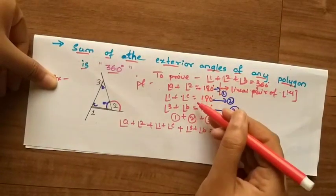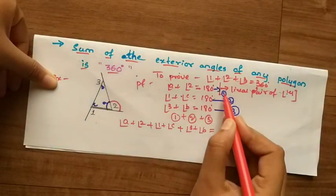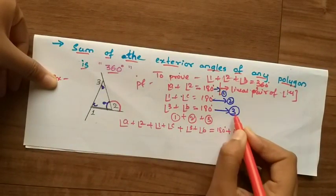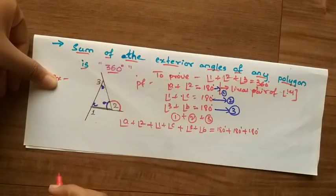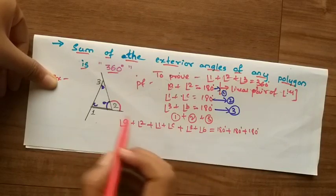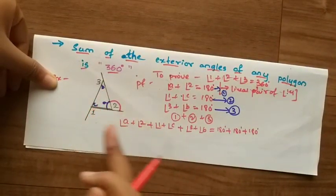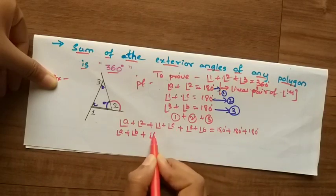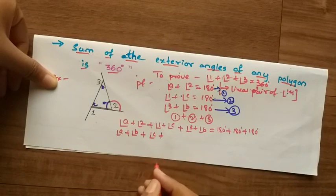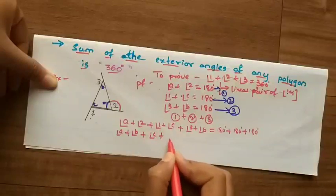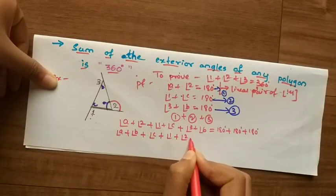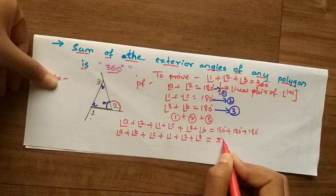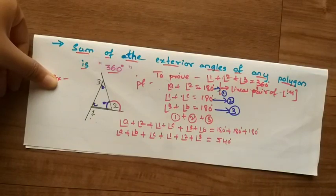The right-hand side equals 180 + 180 + 180 = 540 degrees. Now separate the interior angles and exterior angles. The interior angles are angle A + angle B + angle C, and the exterior angles are angle 1 + angle 2 + angle 3. So: (angle A + angle B + angle C) + (angle 1 + angle 2 + angle 3) = 540 degrees.